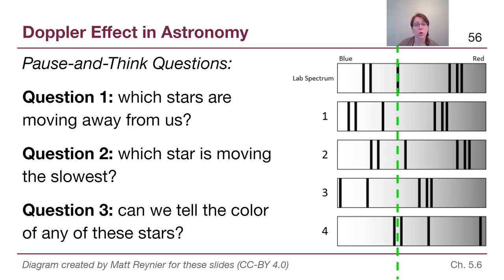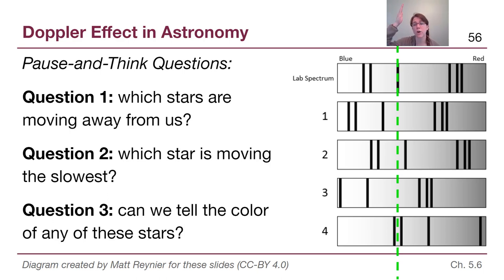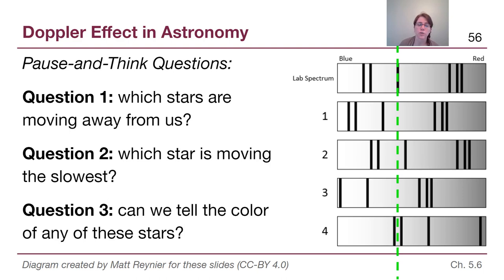Question two: which star is moving the slowest? Remember, slow and fast do not care about which direction the shift happens — all that matters is how big the change was between the vertical green dashed line and where the pattern actually is. If we look at all four stars, the one that has shifted by the smallest amount overall is star two. So for question two, star two is moving the slowest.